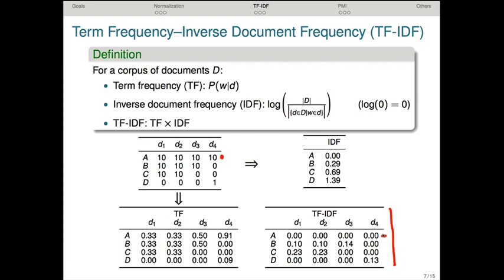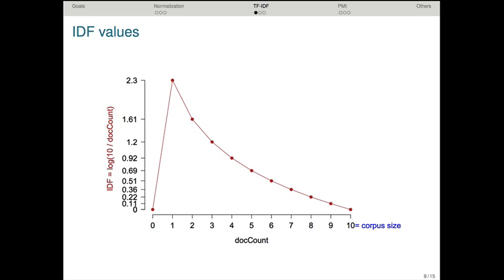More generally, TF-IDF will punish words that occur in many documents, thereby potentially handling for us the relative lack of distinguishing information in high-frequency function words. Let's take a quick look at IDF values in more detail. The x-axis gives the document count, and the y-axis gives the IDF values for a corpus of 10 documents. And you can see that the IDF value reaches its peak when the word is in relatively few documents, and it reaches its nadir when the word is either in every document in the corpus or when it's in none of them.